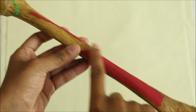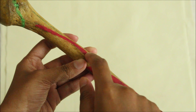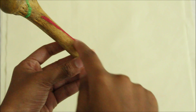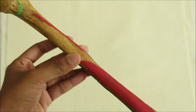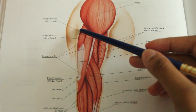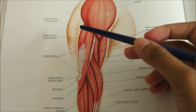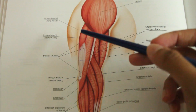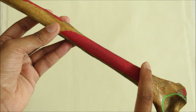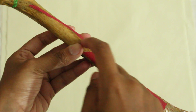The posterior surface gives origin to the lateral head of the triceps brachii from the oblique ridge above the radial groove. The medial head of the triceps brachii originates from the posterior surface below the radial groove.